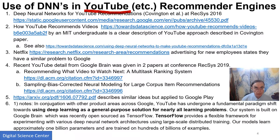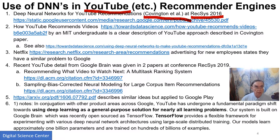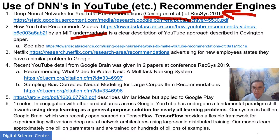So let's go to YouTube. There are now some papers on YouTube. There is a paper at REXIS 2016, the standard conference in the field. A Google team wrote an article on deep neural networks for YouTube, which shows you when all this started. There is also an MIT undergraduate who, in Towards Data Science, a well-known website, effectively reviewed this paper, and another similar review with a slightly different title.